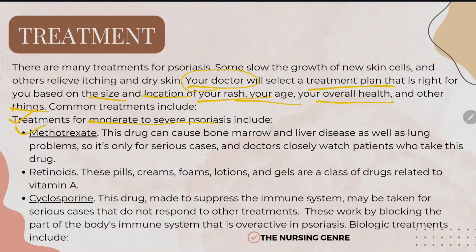The first drug is methotrexate, which can cause bone marrow and liver diseases as well as lung problems, so it is used only for serious cases with close monitoring. Retinoids (vitamin A derivatives) are another option. Cyclosporine suppresses the immune system and is used for serious cases that do not respond to other treatments. It works by blocking the overactive part of the immune system in psoriasis.